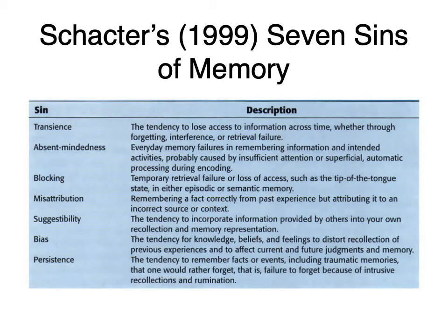This goes back to an article published in American Psychologist in 1999. Daniel Schacter, a cognitive neuroscientist at Harvard University who has been studying memory for decades, laid out what he calls the seven sins of memory. These are things that, because of the way our memory is designed, we sometimes have these problems — and they're unavoidable.